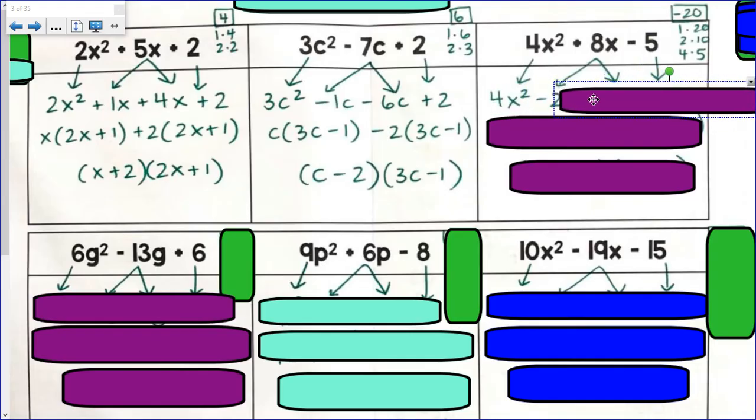I think we can see it's pretty clear. It's 2 and 10. So 4x² minus 2x plus 10x. Notice that negative 2x plus 10x would bring us back to positive 8x. The same way 1x plus 4x is 5x. Negative 1c minus 6c is negative 7c. We're really just rearranging the term.